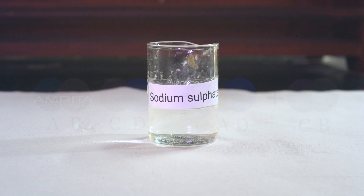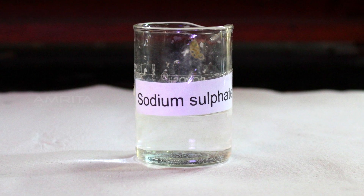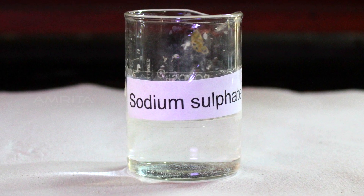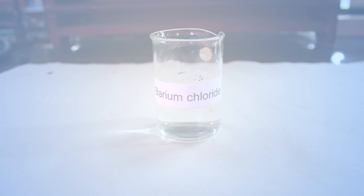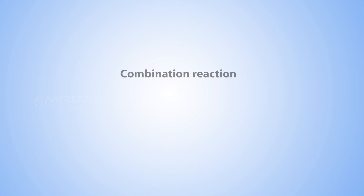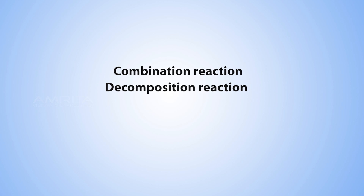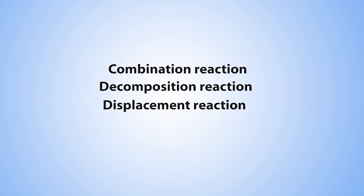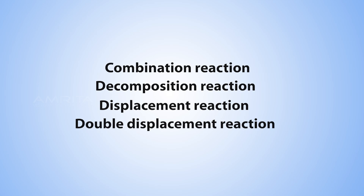The aim of this experiment is to study the reaction between Sodium Sulphate and Barium Chloride solutions and classify it as a combination reaction, decomposition reaction, displacement reaction, or double displacement reaction.